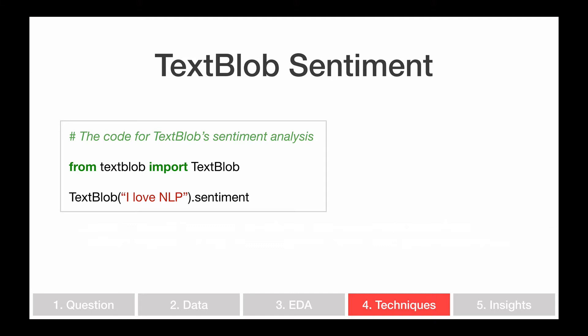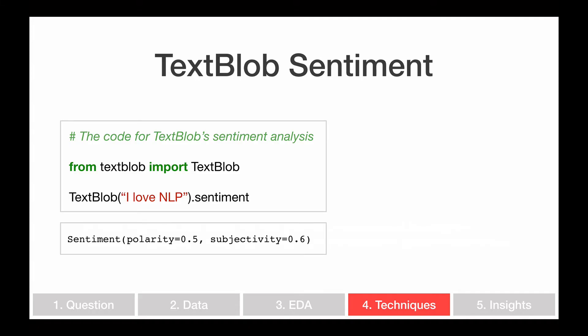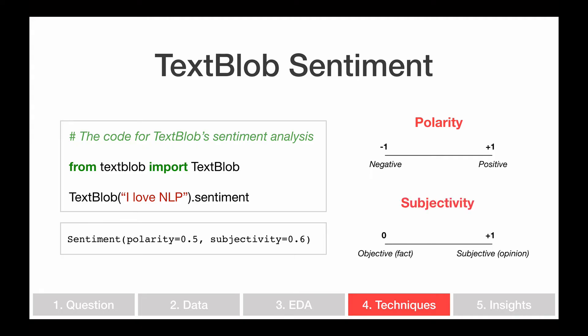Here's what the code looks like for sentiment analysis using TextBlob. You import TextBlob, then apply it to your text. In this case my phrase is 'I love NLP' and you just do dot sentiment. The output shows polarity: positive one means really positive sentiment, negative one means negative sentiment. There's also subjectivity: positive one means there's opinion in that phrase, and zero means the phrase is more about facts and less about opinions.